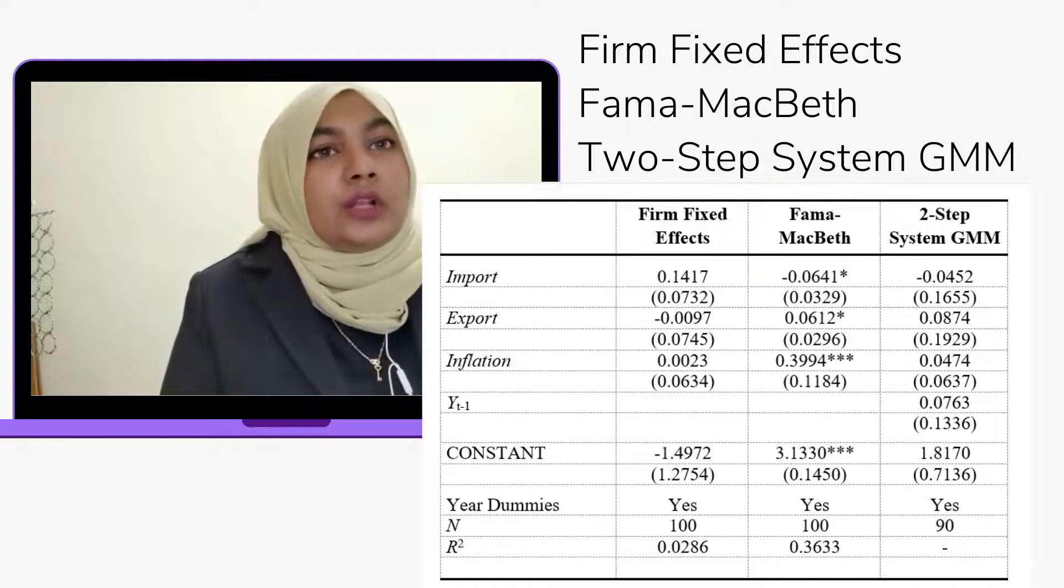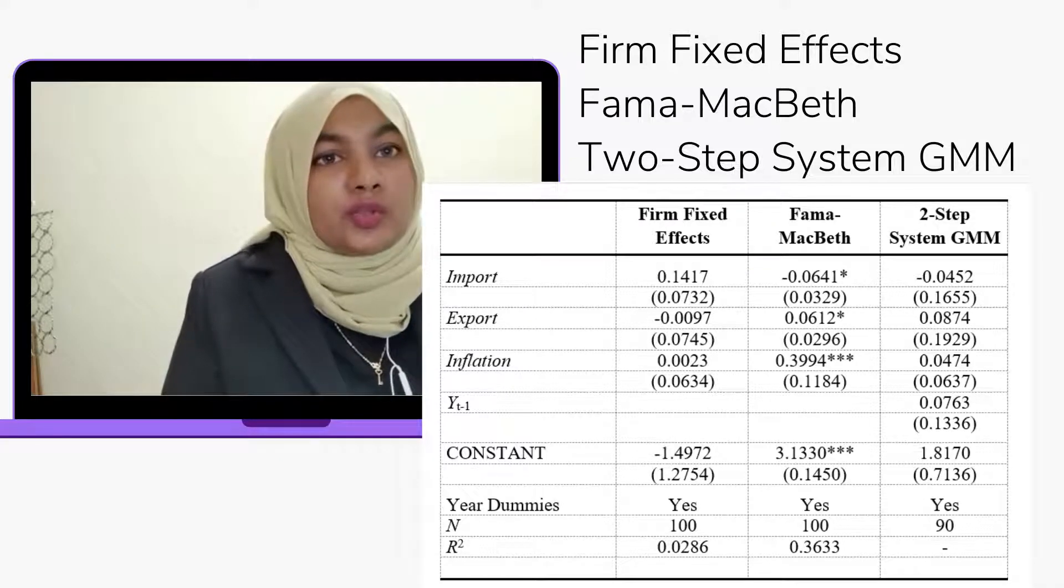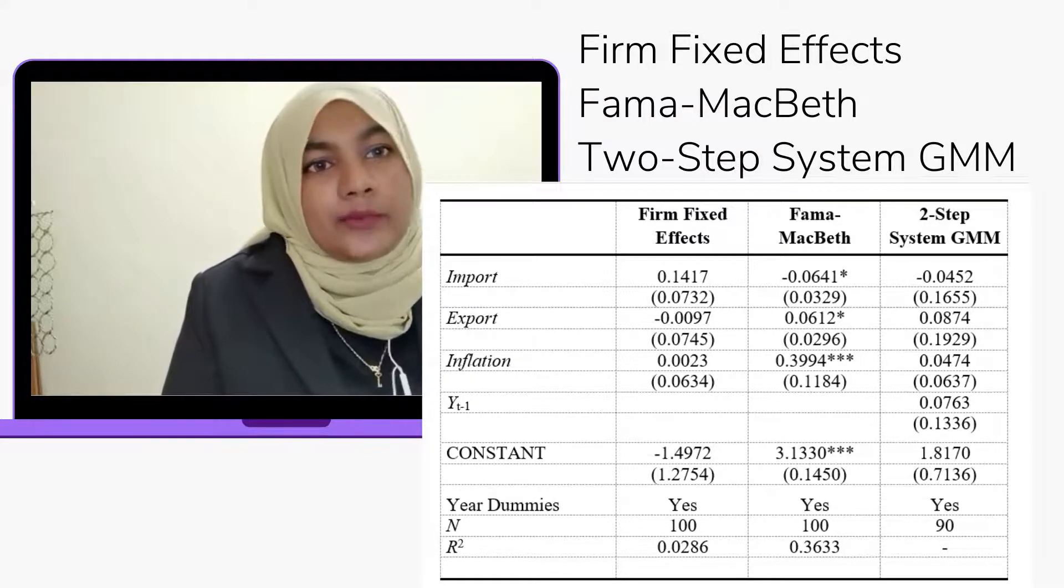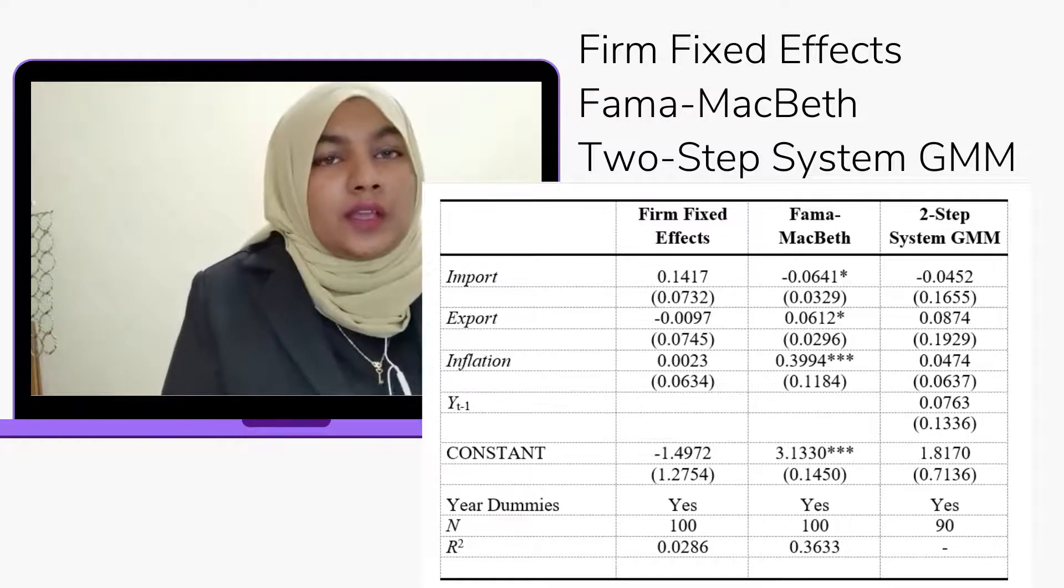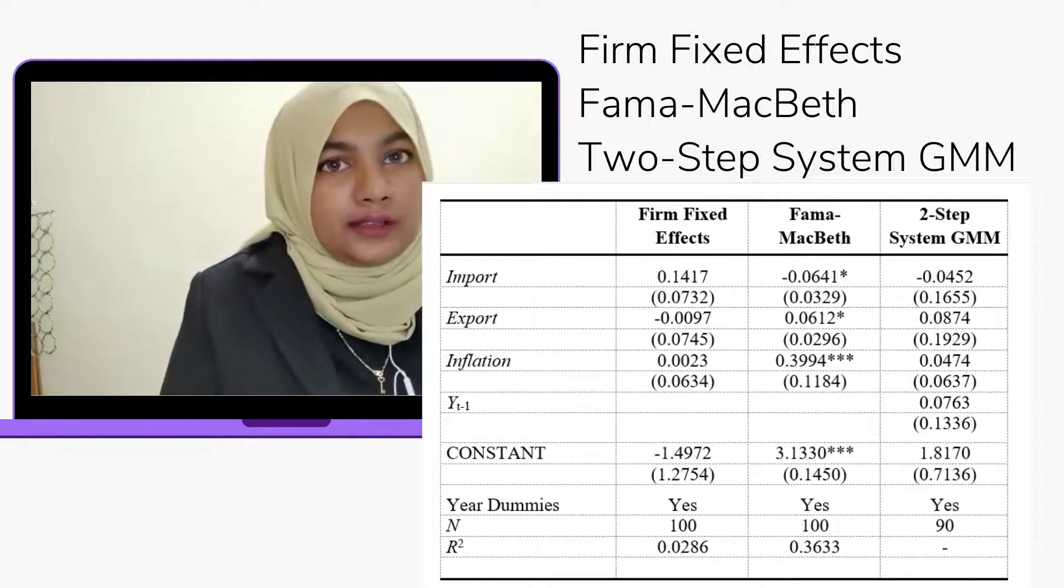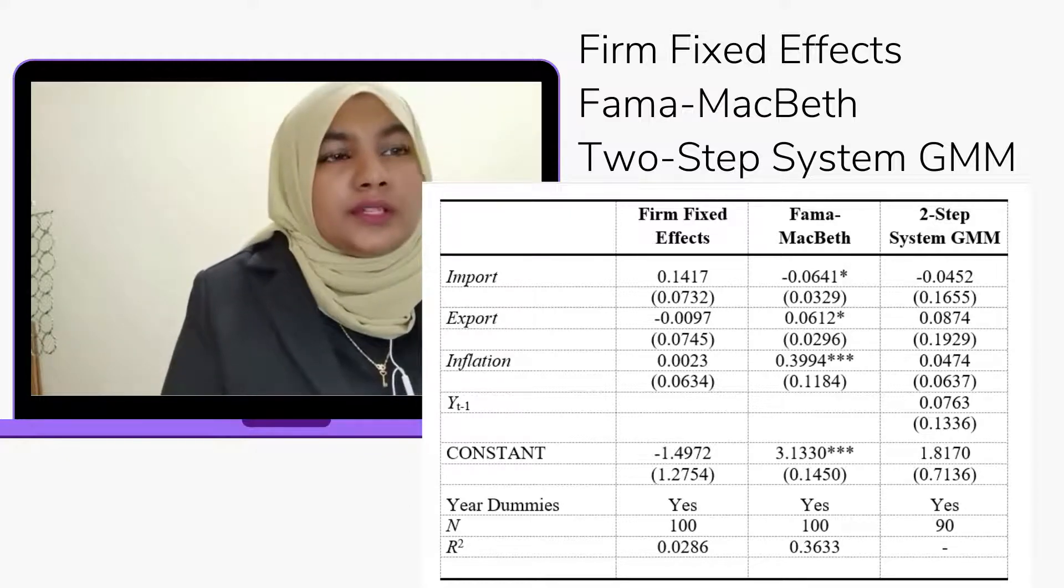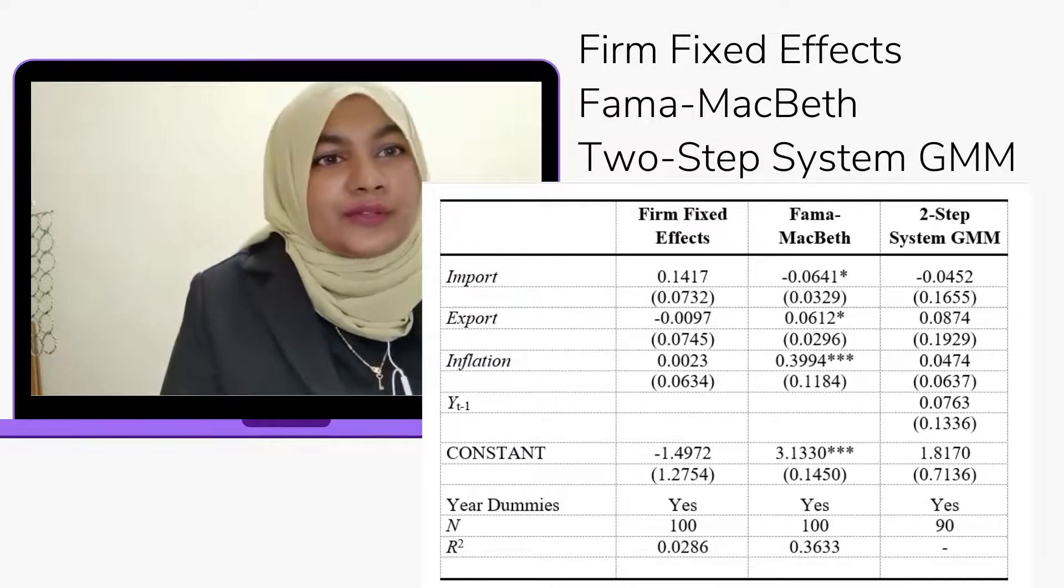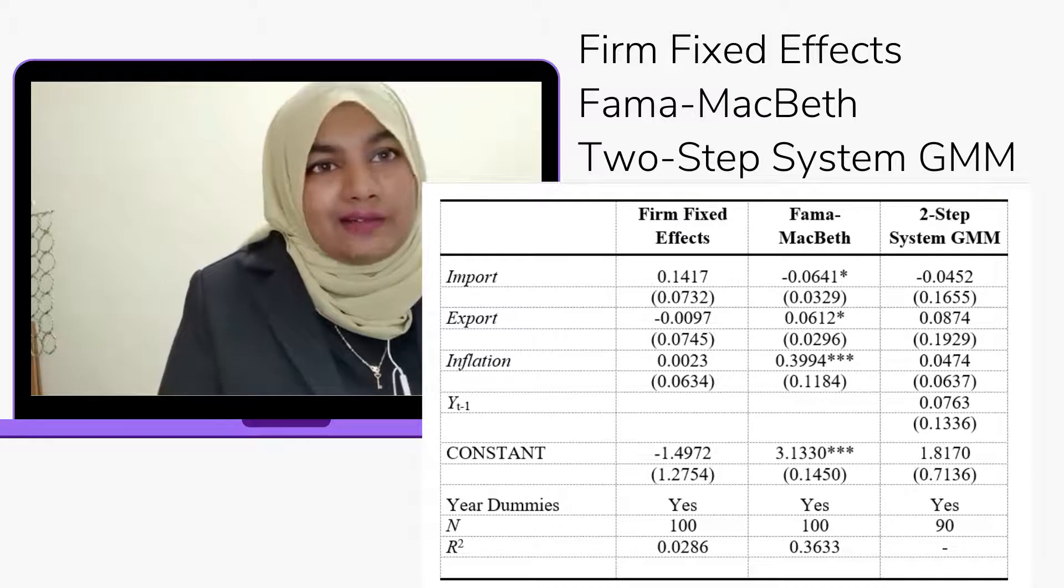Based on the results for Firm Fixed Effects, the p-value is less than 0.05 with an F-value of 0.000. The pooled data is all positive except for export, which shows a negative coefficient value of -0.0097 with standard error of 0.0745.